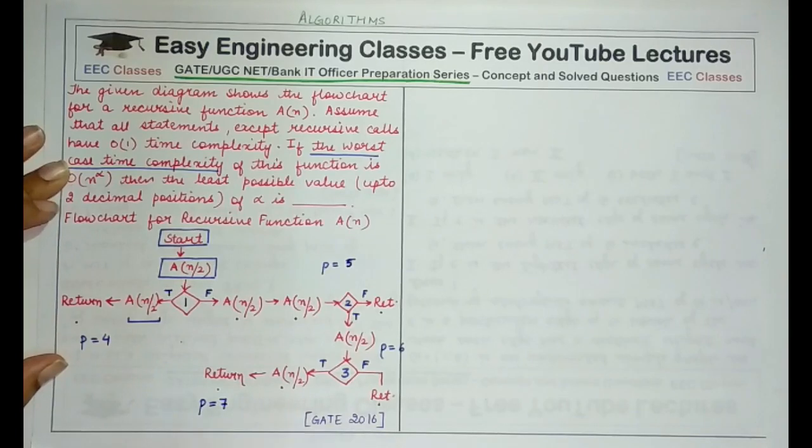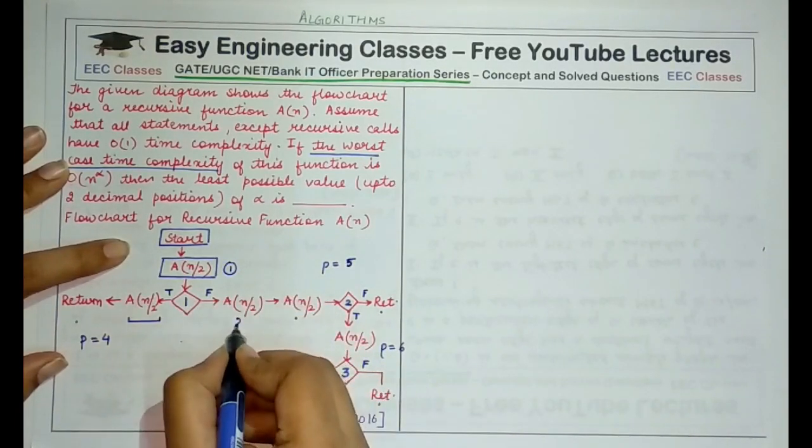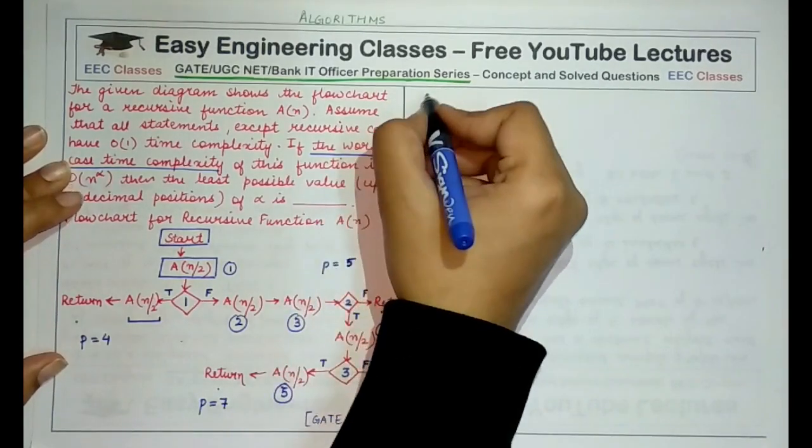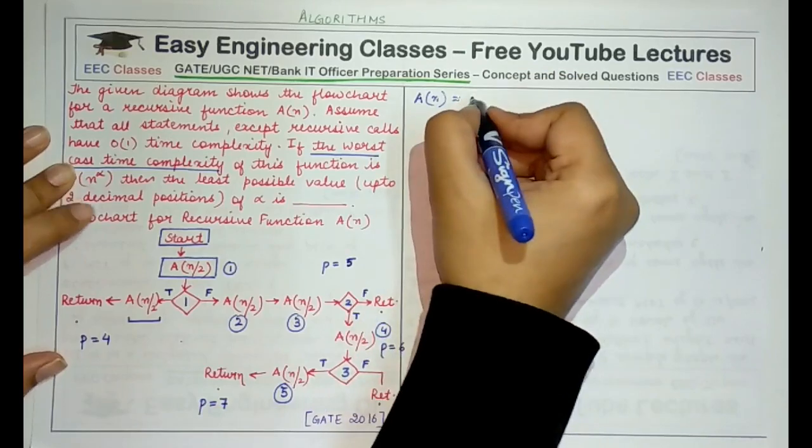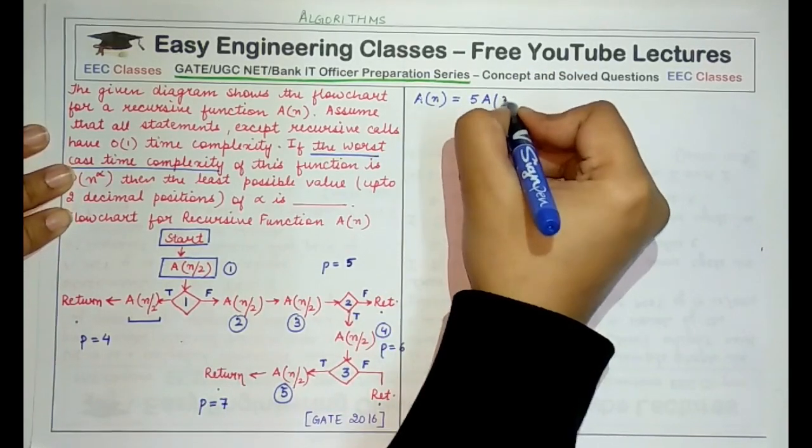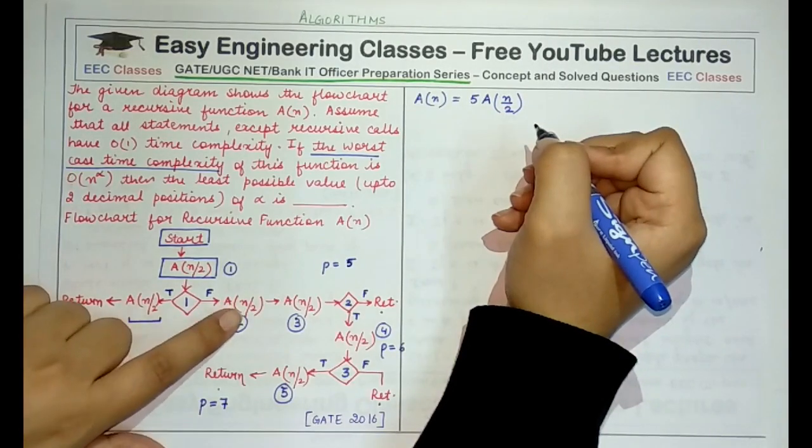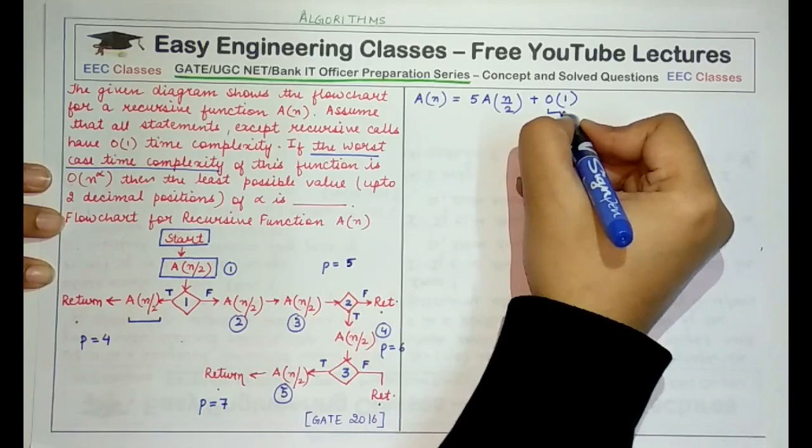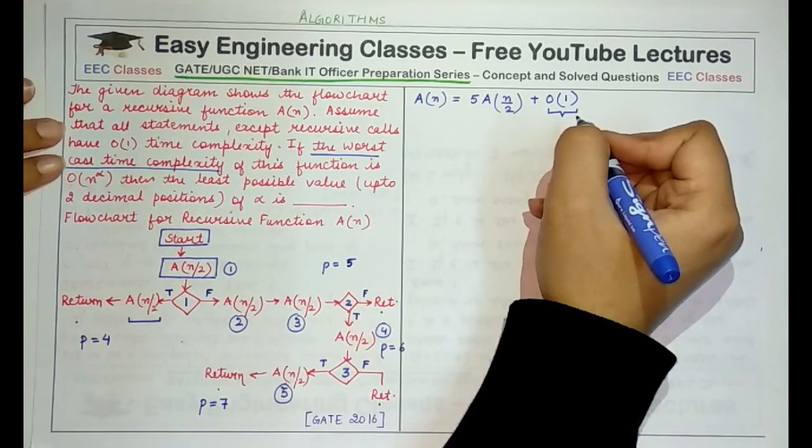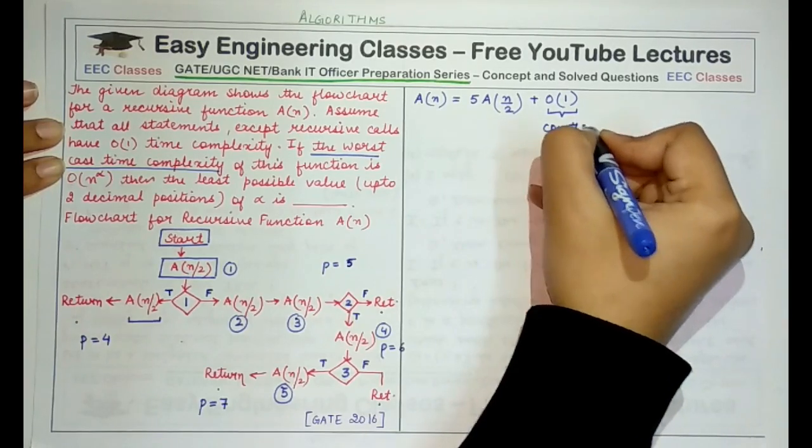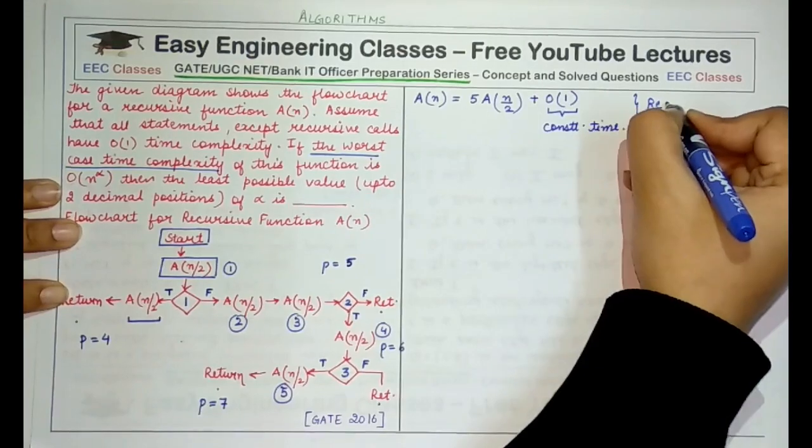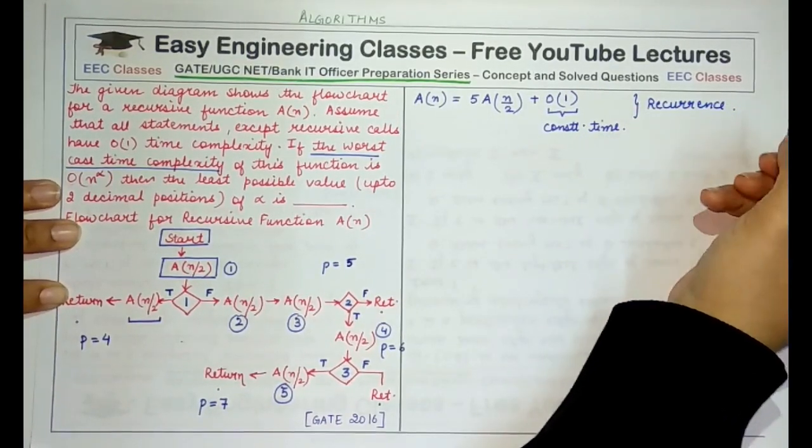And analyzing this path, we would get the worst case time complexity. So how many times are the recursive calls being made in this longest path? 1, then 2, then 3, then this is the 4th one, 5th one. So basically, if I have to write the recursive function for A(n), I would be writing it as 5 of A(n/2), because the problem or the recursive call is for half the size of the initial problem, plus big O of 1. Why big O of 1? Because we are told that all the remaining statements except the recursive call take constant time. So this is our recurrence that would result in case when the longest path is executed or the worst case is executed.